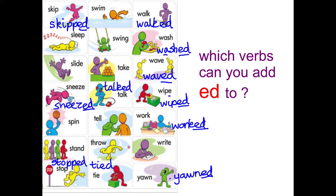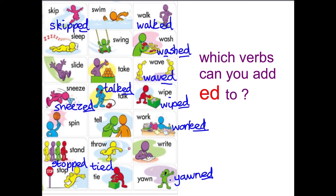So some of them you can add -ed to. The blue ones we've just done are called regular verbs - the ones you add -ed to. The others are called irregular verbs. You need to think about them in a sentence because some of them are quite tricky. Let's start at the top.